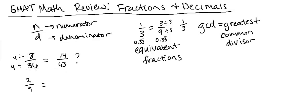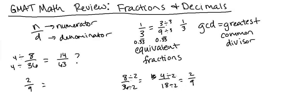If you're not sure what the greatest common divisor is — say you have eight over 36 — you can divide by any common factor. For example, dividing by two gives four over 18, but that can be further reduced since two is a factor of both. You'd divide by two again to get two over nine. That's why dividing by the greatest common divisor saves time, but you can also pull out common factors step by step until fully simplified.